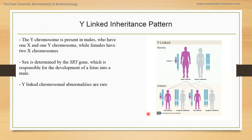For Y-linked inheritance pattern, as you know, Y is the chromosome only present in males. Therefore, if it is affected, generally only males are affected. There are few Y-linked chromosomal abnormalities, and usually the deletions cause infertility, which is why they are not propagated.